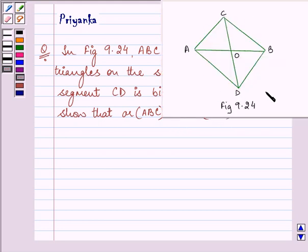This is the figure which we need to refer. We are given that ABC and ABD are on the same base AB and if line segment CD is bisected by AB at O, then show that area of ABC is equal to area of ABD. Now, here we are given that CO is equal to OD.